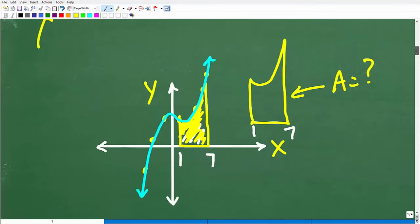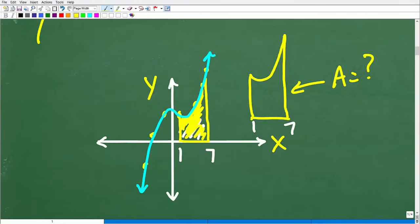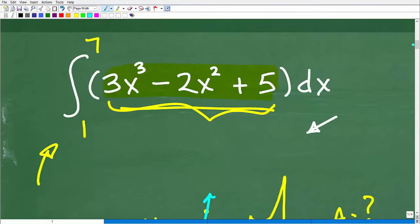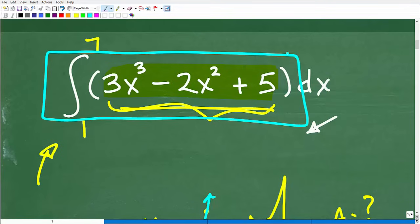Here's my graph. If I wanted to find the area underneath it from 1 to 7, bounded by the x-axis right here, that's what this is going to be able to do. Now I actually have to do this integral thing right here. We have to integrate this function.